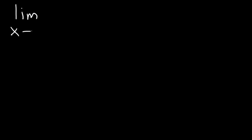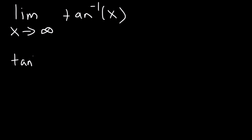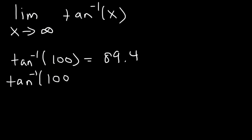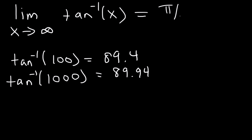What is the limit as x approaches infinity of the function arctangent of x? What is the arctan of infinity? Let's plug in points with the calculator in degree mode. The arctan of 100 is 89.4. The arctan of 1,000 is 89.94. Notice that it gets closer and closer to 90. So this is equal to 90 degrees, or in radians, pi over 2.